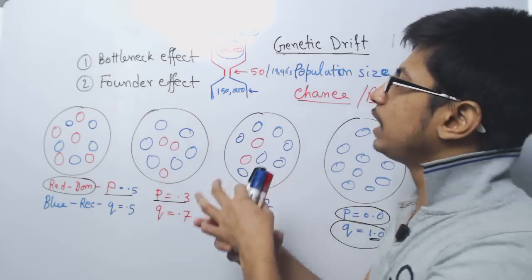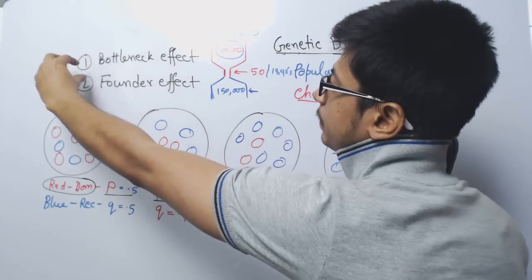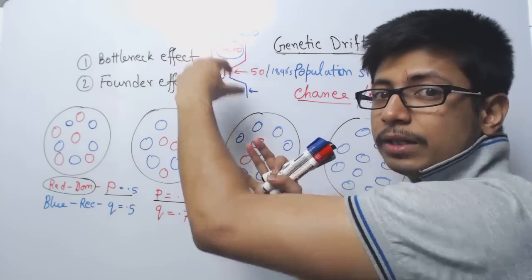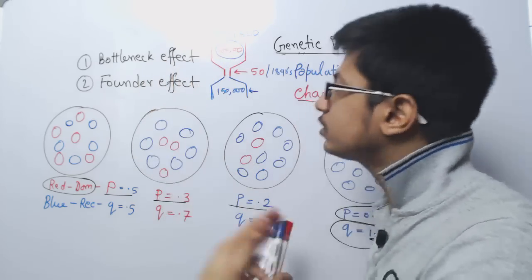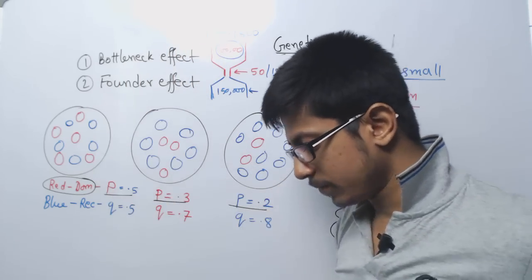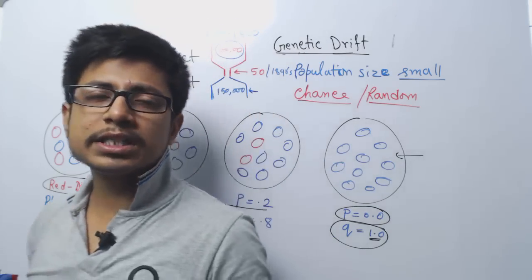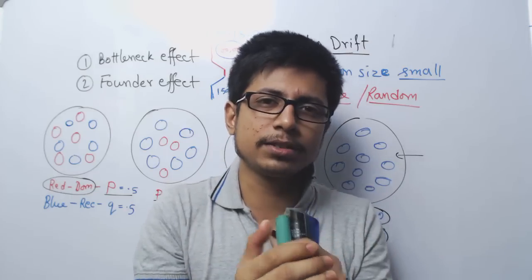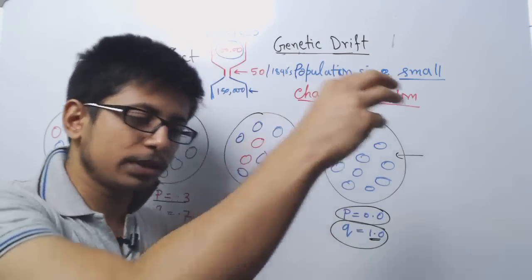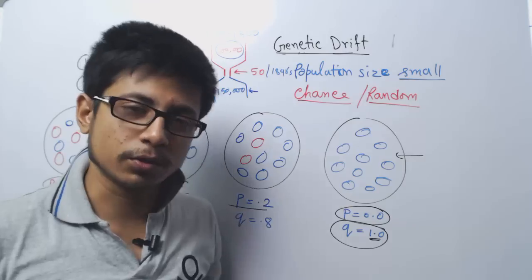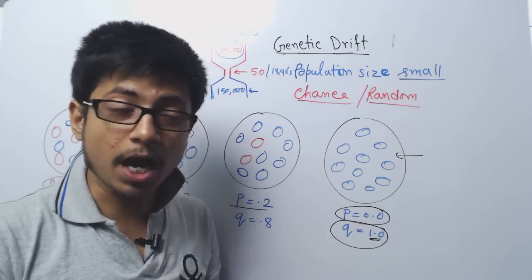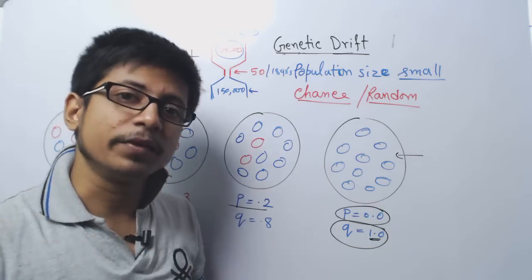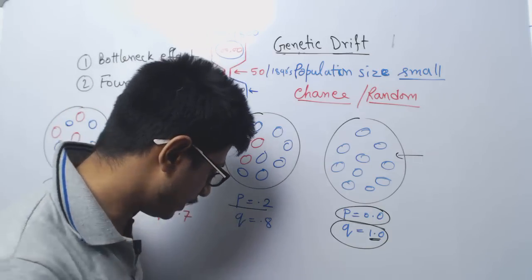Genetic drift occurs every time your population is squeezed through a very low number — which is a bottleneck — or if you put individuals somewhere else, which is also a small population at the start. In both cases, it will affect and change the allele frequency over time.